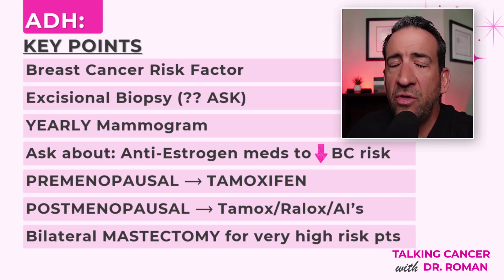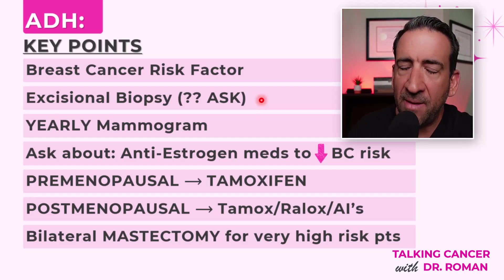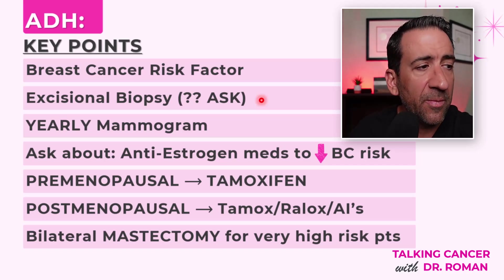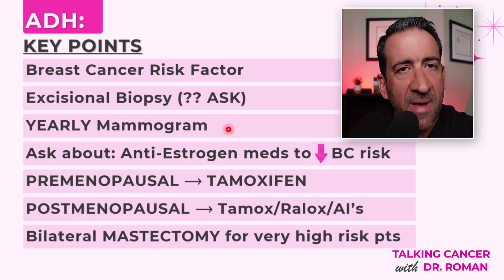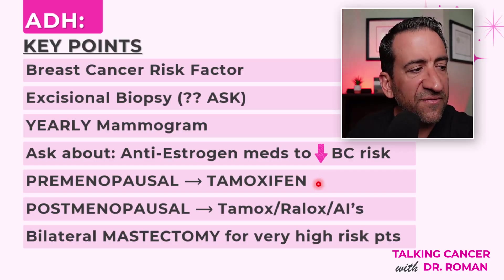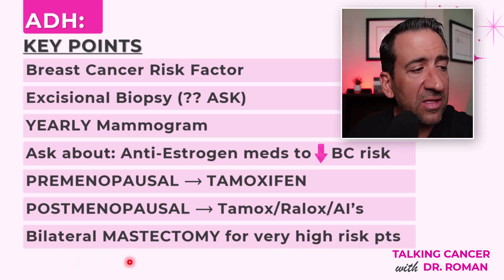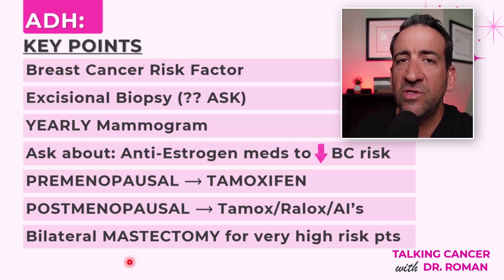To summarize the key points on atypical ductal hyperplasia: it is not breast cancer, but it is a risk factor for breast cancer. If diagnosed on a biopsy, ask if you require an excisional biopsy to make sure nothing more advanced is present. Stay up to date on yearly mammograms. Ask about anti-estrogen medications to decrease your risk — tamoxifen if pre-menopausal; tamoxifen, raloxifene, or one of the three aromatase inhibitors if post-menopausal. Bilateral mastectomy is an option but reserved for very high-risk patients. Please like, subscribe, and share — we need to educate the public, and one of these videos may just save someone's life.